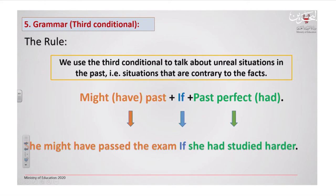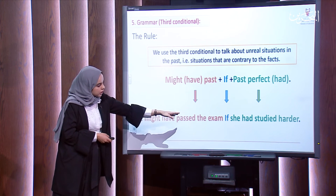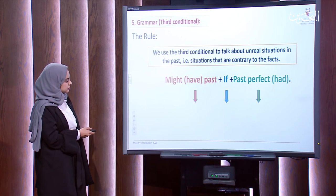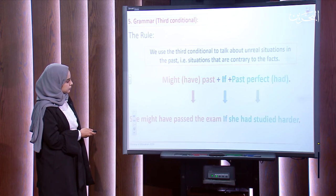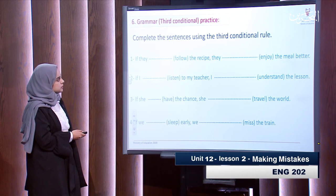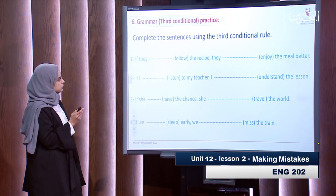Now we will apply it to the next sentence. Here we have 'might have passed the exam,' then 'if,' and finally the past perfect. Now let us try to complete the sentences using the rule that we have just learned — the third conditional rule.